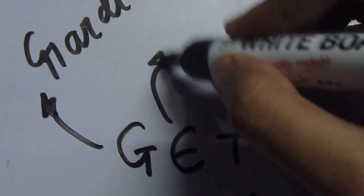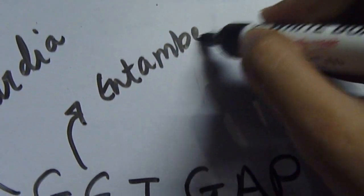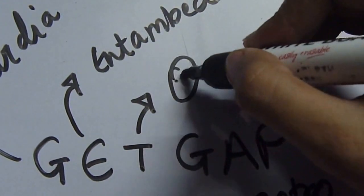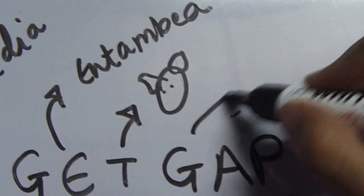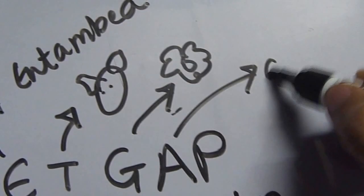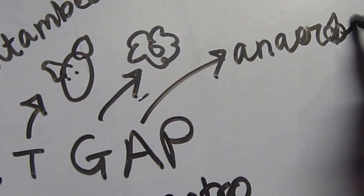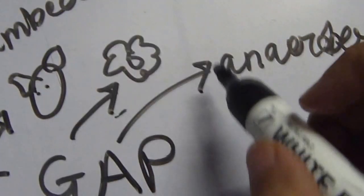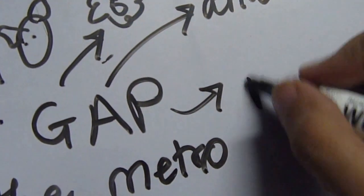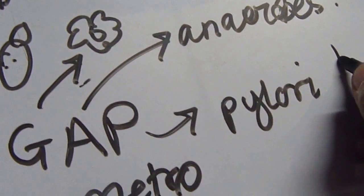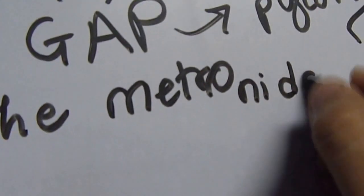The G stands for Giardia. E stands for Entamoeba. The T stands for the Tricky Green Goblin we just learned. The next G stands for the Gardnerella vaginalis infection we just learned. A stands for all the anaerobes, and let's not forget that Gardnerella vaginalis is also a mixed infection of gram-negative rods and a lot of anaerobes. I forgot to mention that previously. And the P stands for H. pylori infections, the one that causes stomach ulcers.